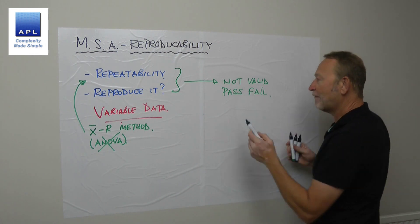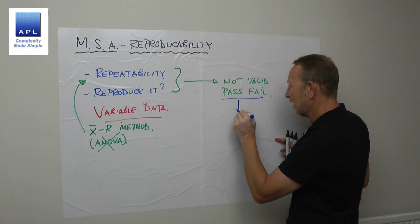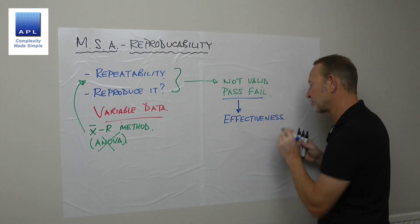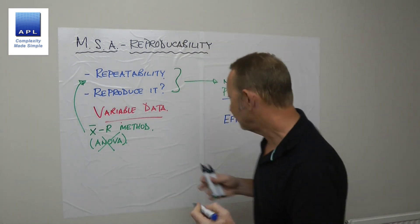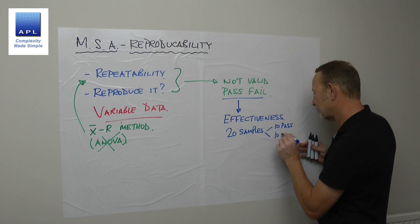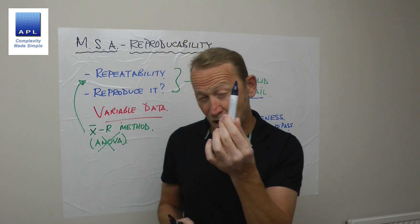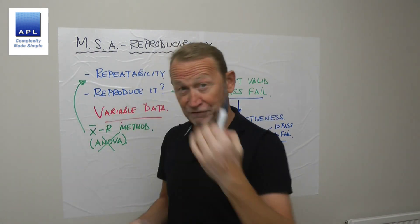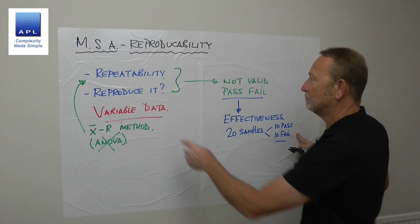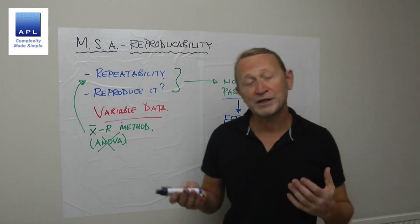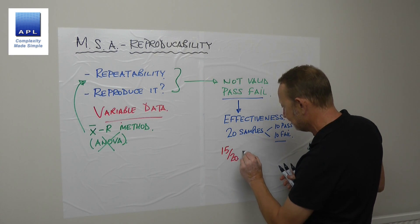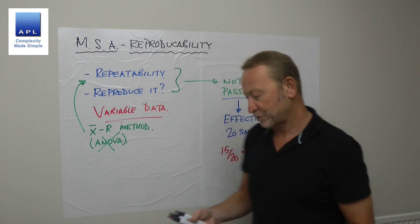But of course, because we're doing pass/fail MSA, the language changes. The key metric is effectiveness — how effective is your measurement system? What you should do is identify 20 samples, and they must be 50/50: 10 passes and 10 fails, assessed by a human who has decided these are definitely passes and these are definitely fails. Then you give them to your measurement system and see how many it gets right.